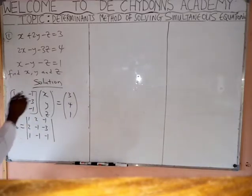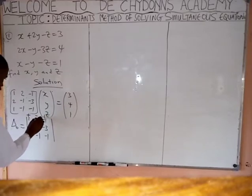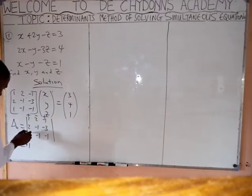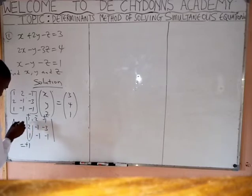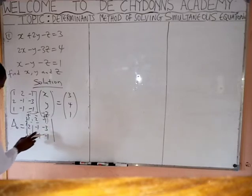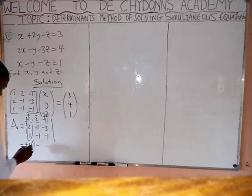See how you get it. A matrix here is known to be plus, minus, plus — it is constant. What you write is plus 1. Hold this first column and hold this row. Once you hold this column and hold this row, these four elements will appear. Get the determinant of these elements: minus 1 times minus 1 equals 1, minus minus 1 times minus 3 equals 3.